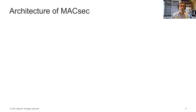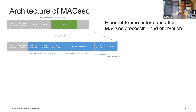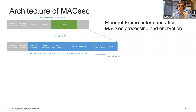Let's look at the architecture of MacSec. Here we see an example of the Ethernet frame with the payload, and when MacSec is enabled we see the addition of a SEC tag and ICV, so that we can protect the whole frame using MacSec.